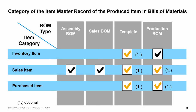Depending on the BOM type, you must define a certain category in the item master record of the produced item. For the assembly and sales BOMs, the finished product has to be a sales item. Templates can have each of the three attributes: purchased, sales, and inventory items. The finished product of the production BOM has to be an inventory item. If you also want to purchase this item, you can define it as a purchased item; if you also want to sell it, you should define it as a sales item. If you produce it for inventory as a component of another BOM, do not define it as a sales item so it will not appear as a choice in a sales document list of items. The components can also have each of the three categories and can also be purchased or sold individually. The components for sales BOMs and assembly BOMs must be sales items.